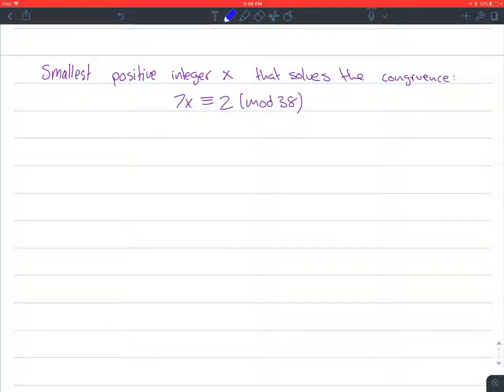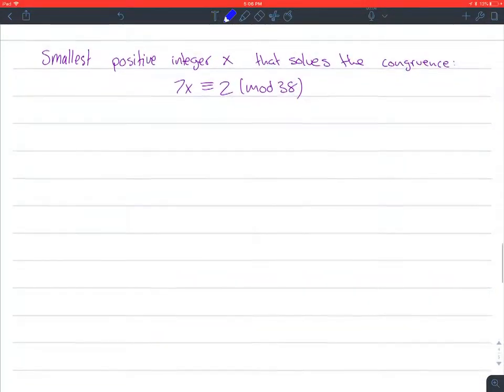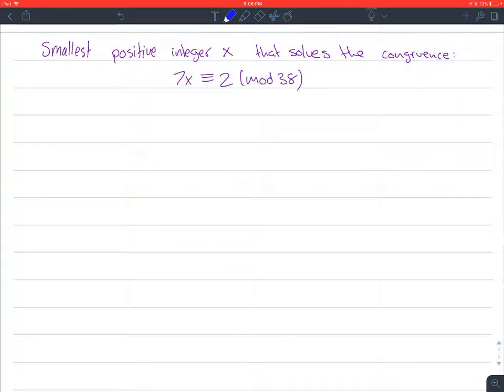Alright, sup nerds, in this question they're asking us to find the smallest positive integer x that solves the congruence 7x is congruent to 2 mod 38.